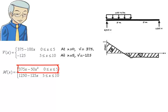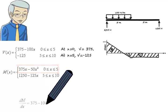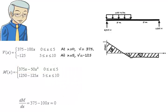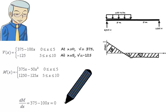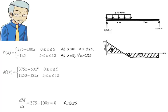That is, since the moment equation is m equals 375x minus 50x squared, then dm/dx must be 0. That is, dm/dx equals 375 minus 100x equals 0. Solving the equation for x, we get x equals 3.75.